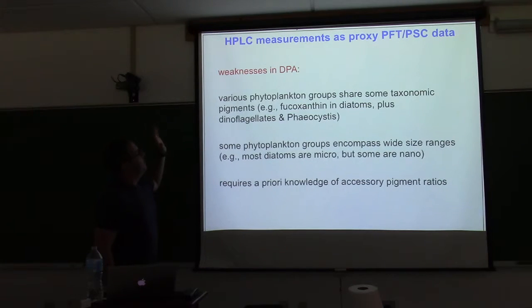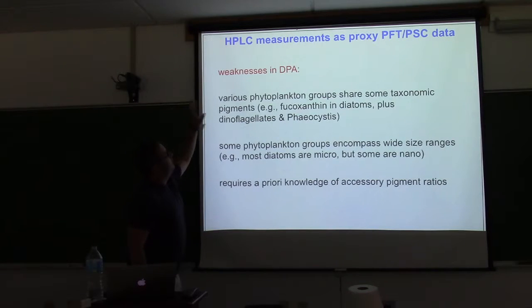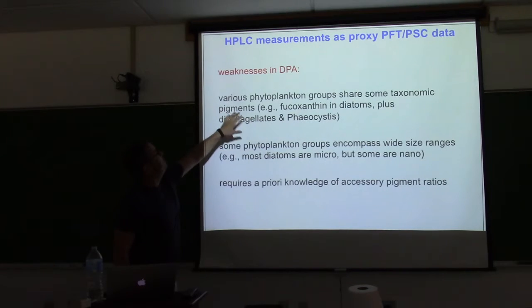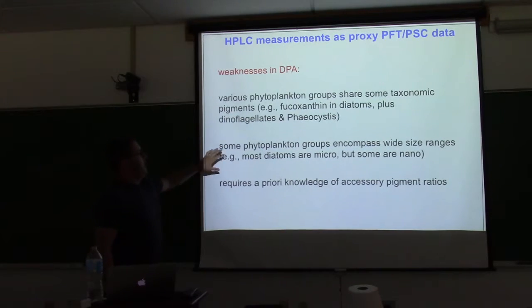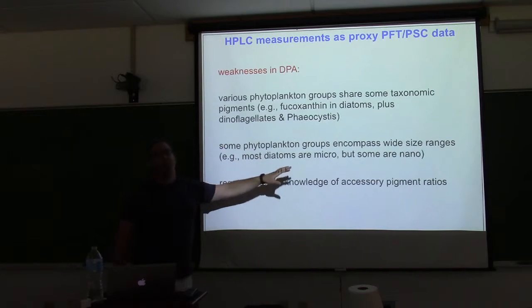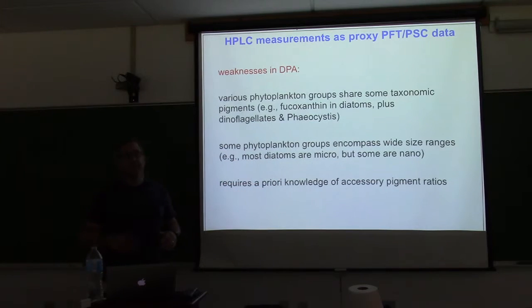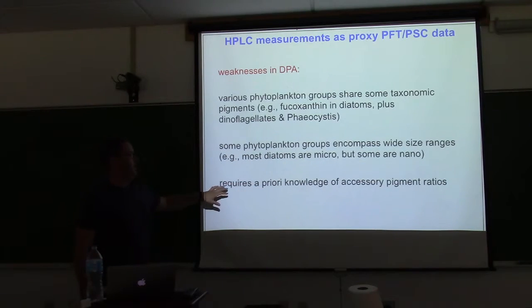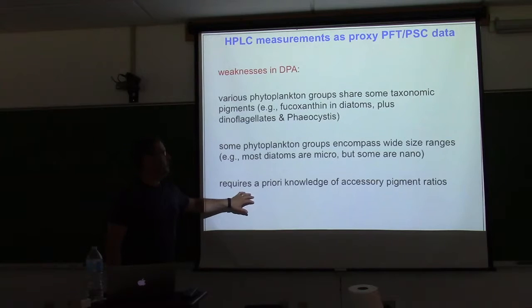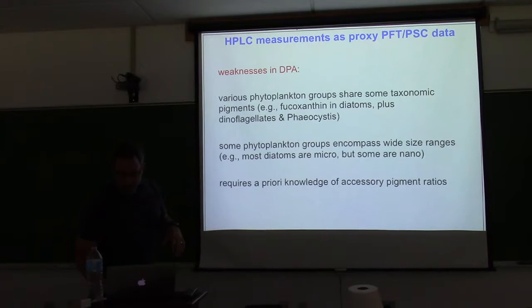Using HPLC has weaknesses because various phytoplankton groups share some pigments. Phytoplankton groups encompass a wide size range — we can't prescribe diatoms to one. And you need some a priori knowledge of accessory pigment ratios.